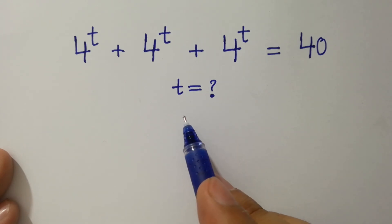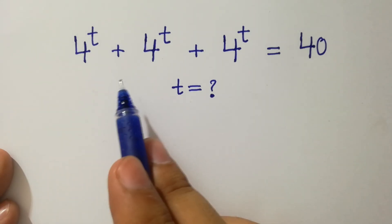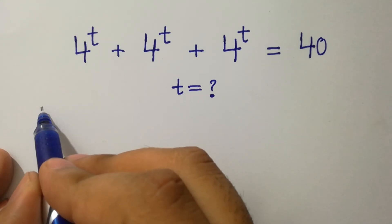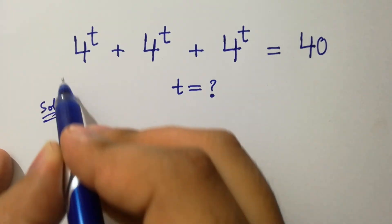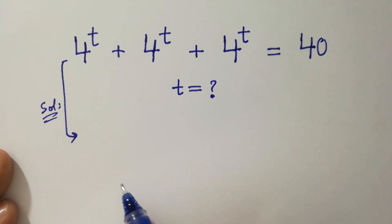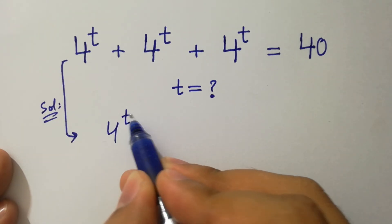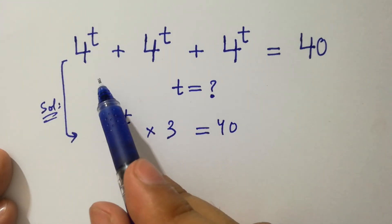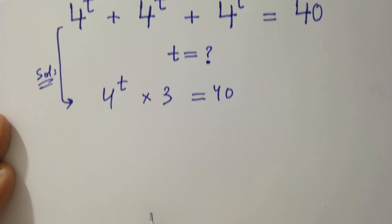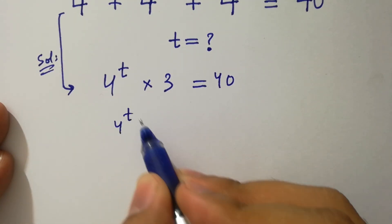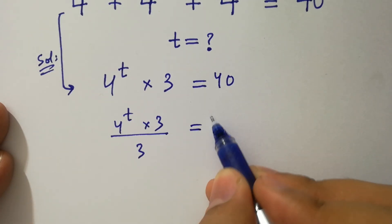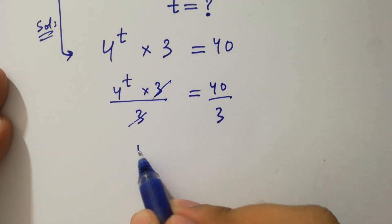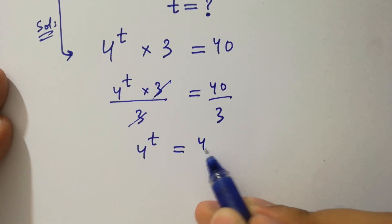Hello friends, find the value of t if 4 to the power t plus 4 to the power t plus 4 to the power t equal to 40. Let's have a solution. This problem is the same as 4 to the power t times 3 equal to 40. Dividing both sides by 3, we have 4 to the power t equal to 40 over 3.